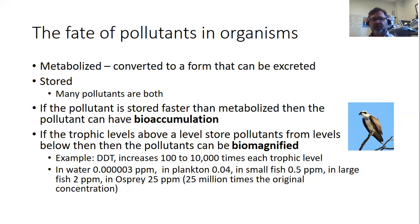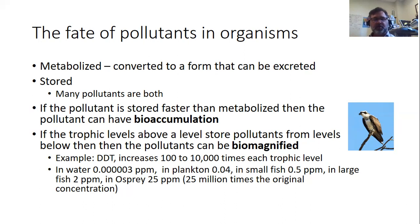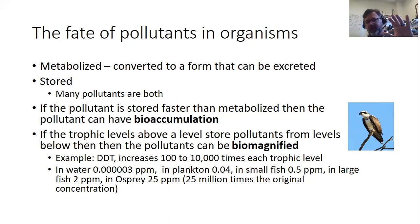Pollutants can also be stored — they go into your body and stay there. Many pollutants do both. Mercury, for example, comes down on food and is unfortunately all around us. You take a little in and your body is able to excrete it — it comes out in your hair, some in your urine, and for birds it can come out in feathers. If a pollutant is stored faster than it's metabolized, your body will store it, and that is called bioaccumulation.